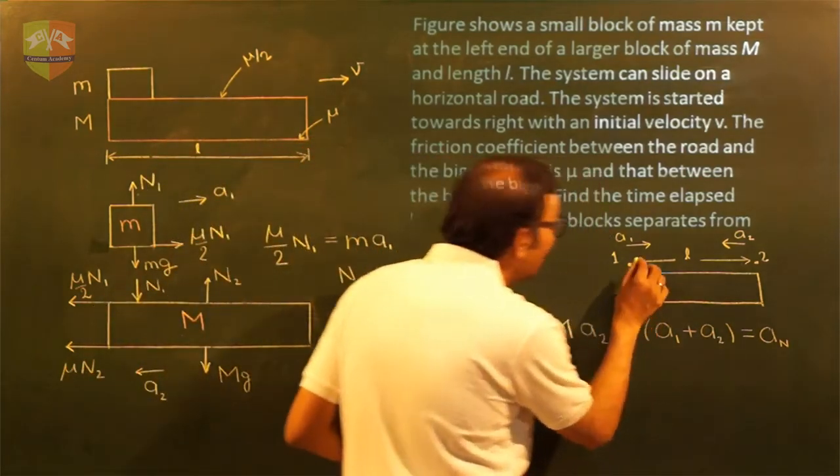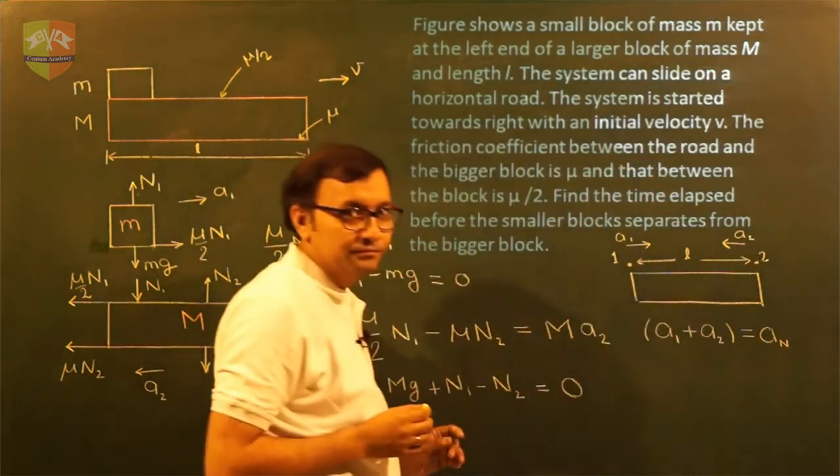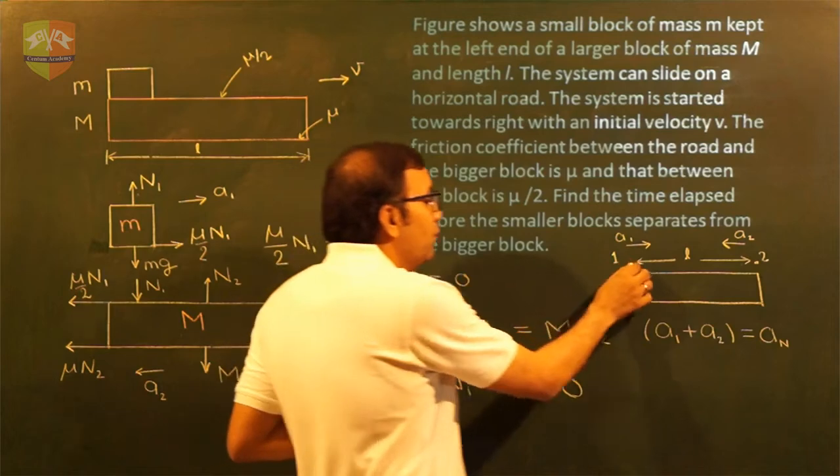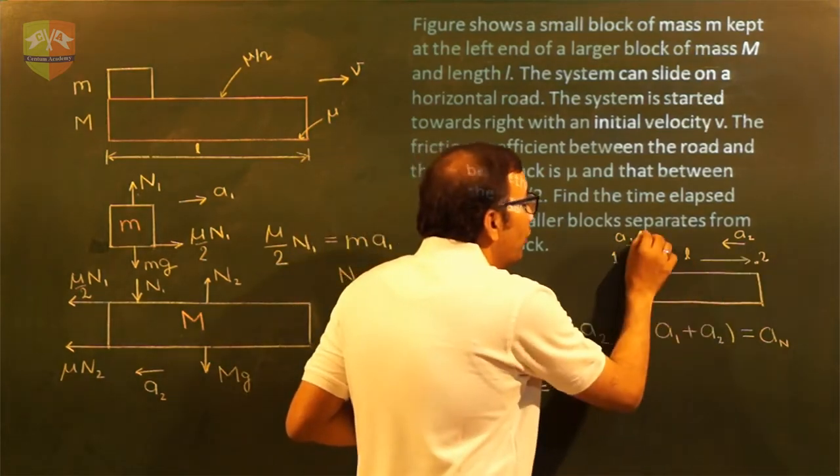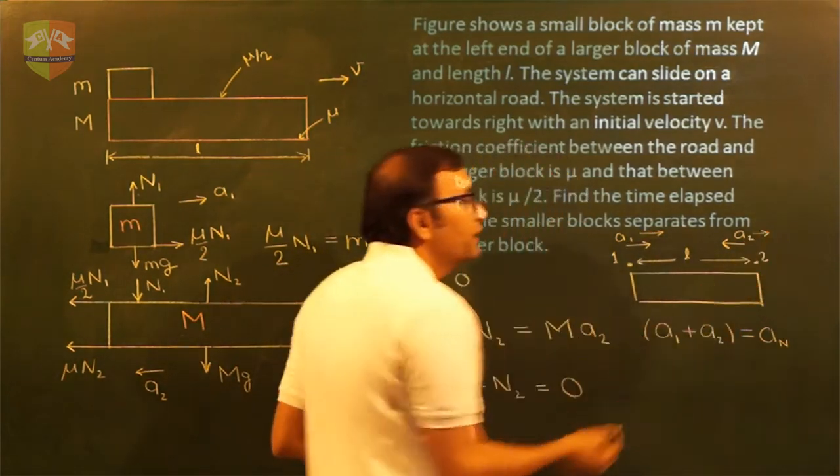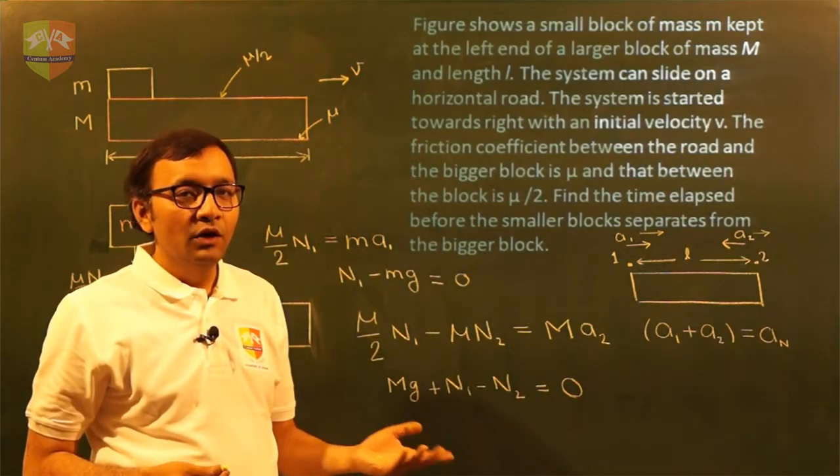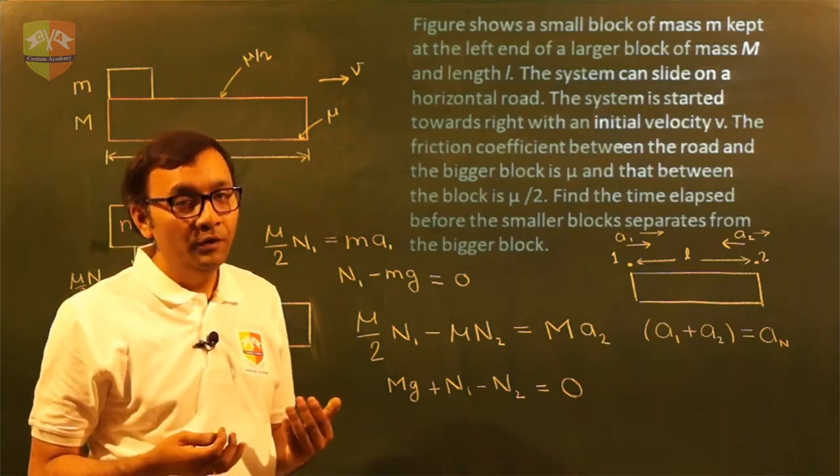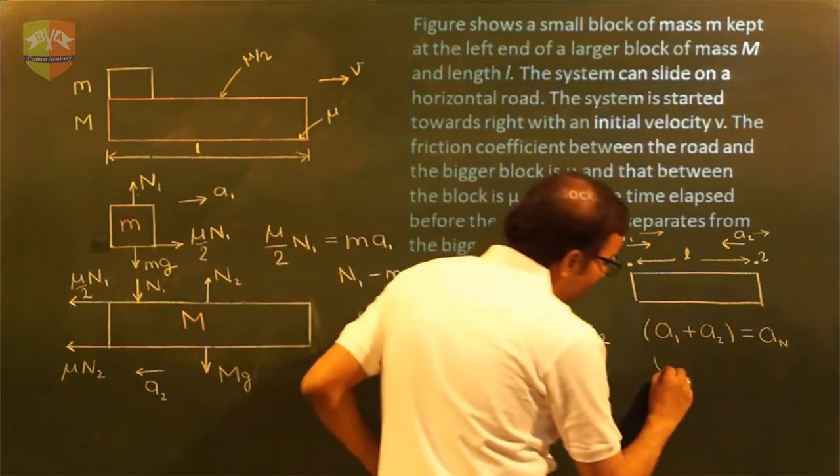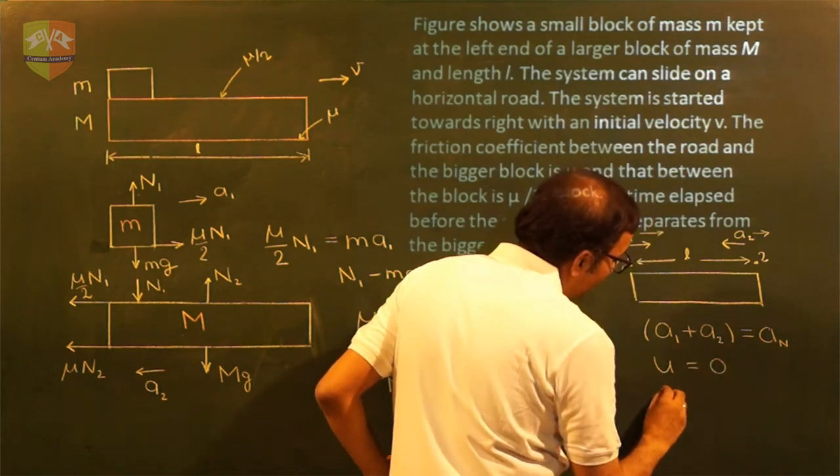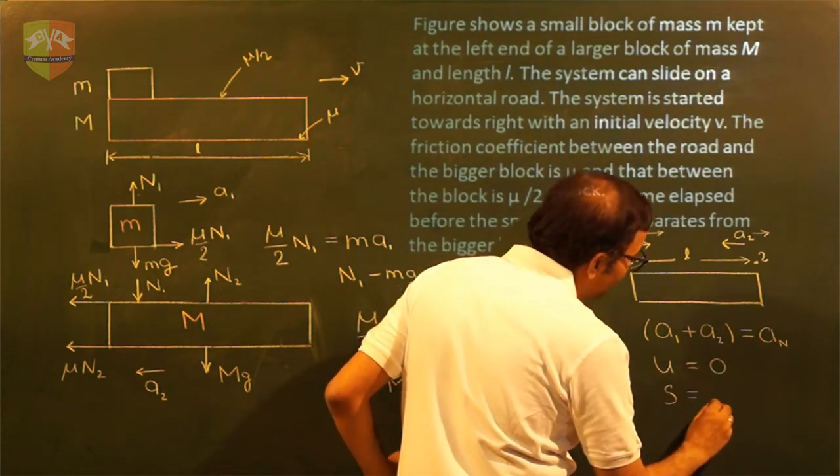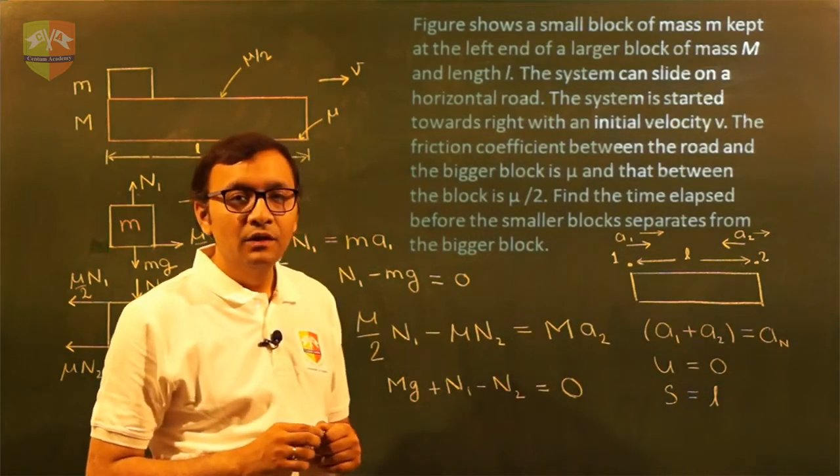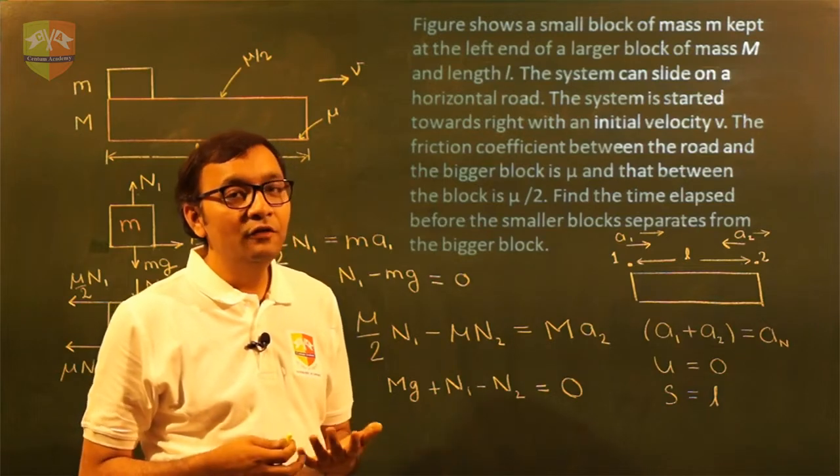Now initial velocity of approach is how much? We have seen that both have started moving together. This point number one and point number two, both are going in this direction with same velocity. So their velocity of approach is zero. So initial velocity is zero and displacement, which is relative displacement since we are talking about relative variable, is L.